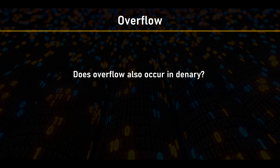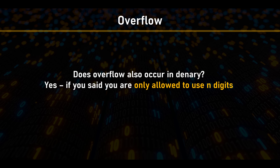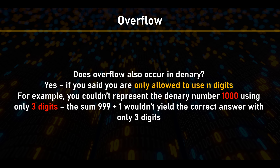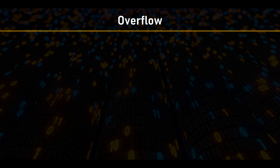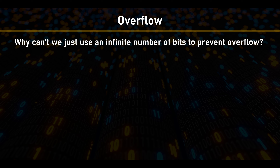Does overflow also occur in denary? On paper, no — you can always write more digits. But if you're limited to, say, three digits, then 999 plus one just becomes 000 because the carry-out is ignored — you don't have the hardware to store that digit.